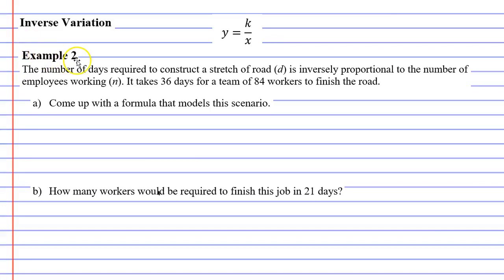In this video, we're going to complete example two. It says the number of days required to construct a stretch of road, D, is inversely proportional to the number of employees working, N. It takes 36 days for a team of 84 workers to finish the road.